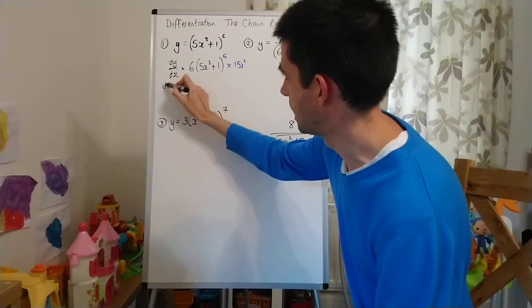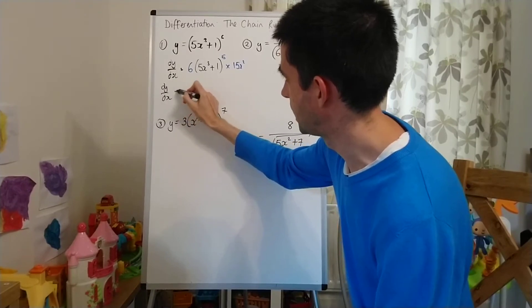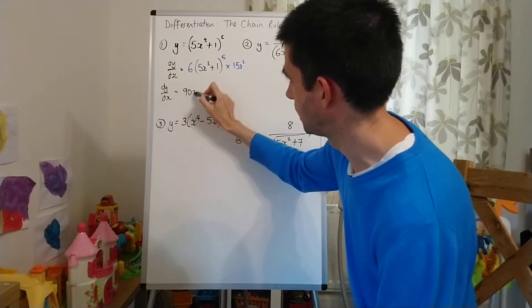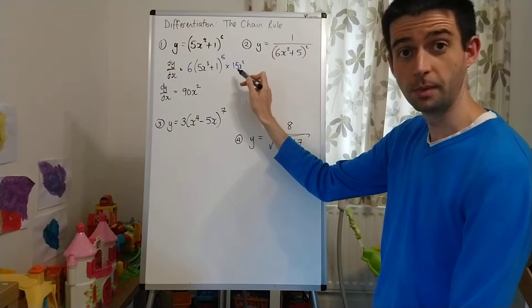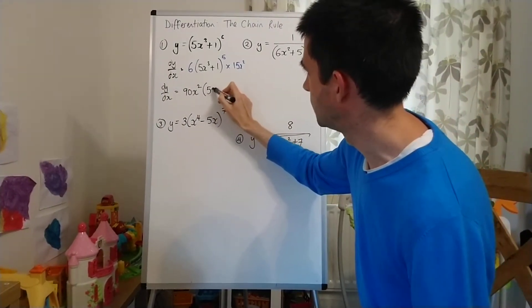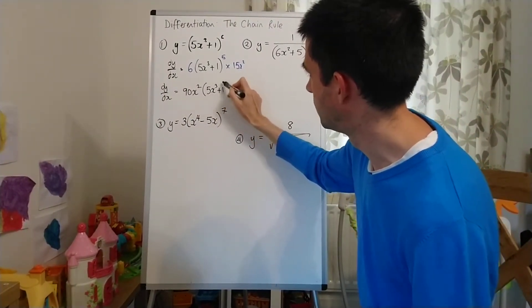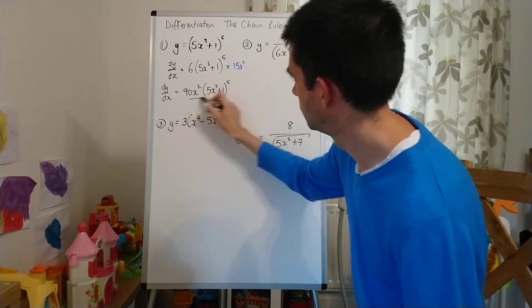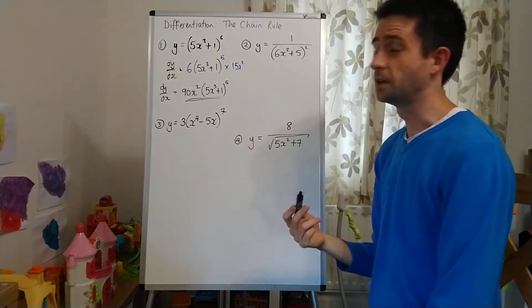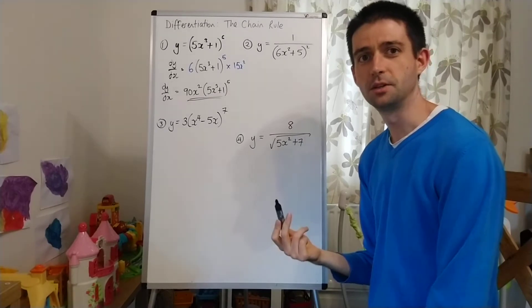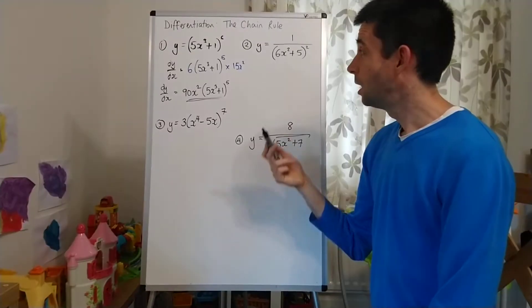And that is going to give me, as my expression for dy/dx, 90x². That's multiplying the 6 by 15. And then in brackets, (5x³+1)⁵. And that is job done. I do not need to expand out any of those brackets.